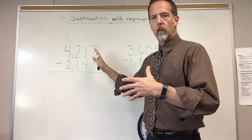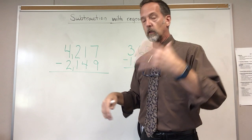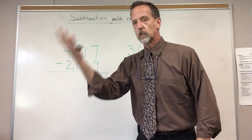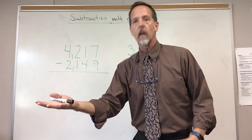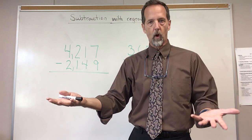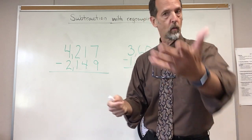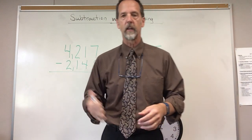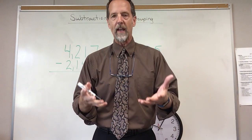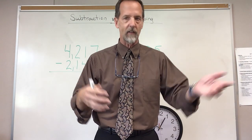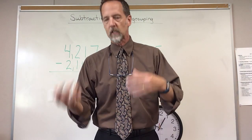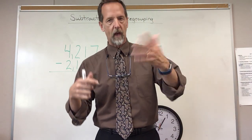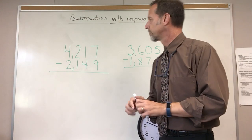So when we start in the ones place, you only have to change two places. Smaller first, then the other one gets larger by a 10. We talked about adding 10s before in the addition video. When you add 10 to something — 7 plus 10 is 17, 6 plus 10 is 16. You simply put the 1 in the tens column.